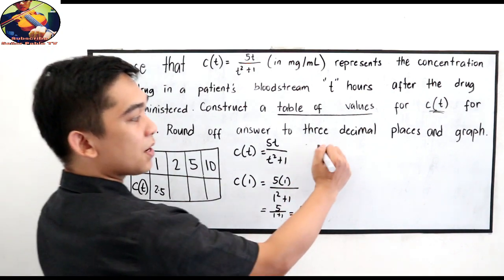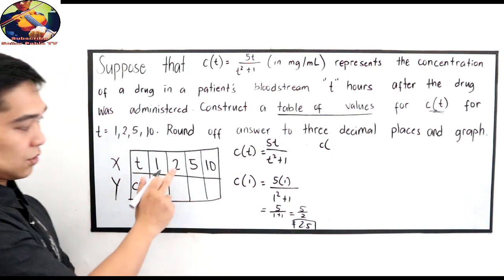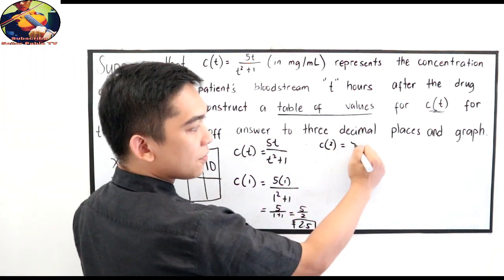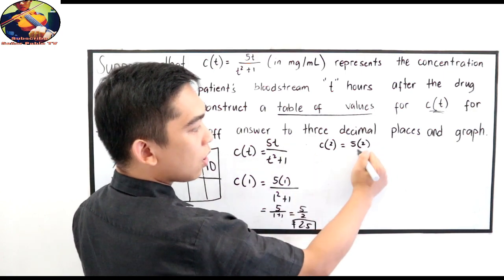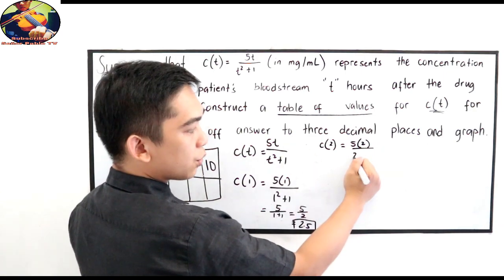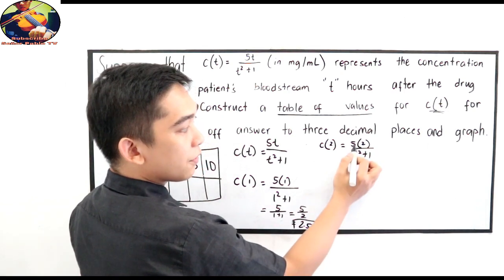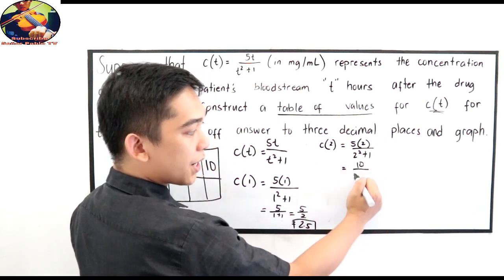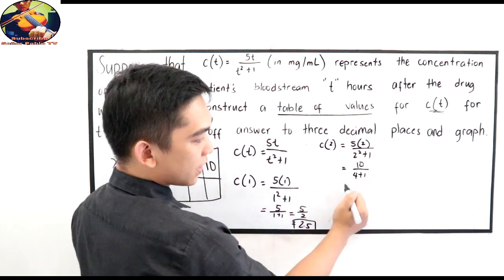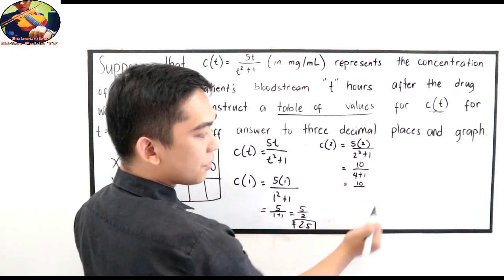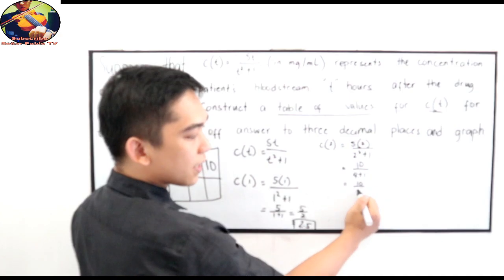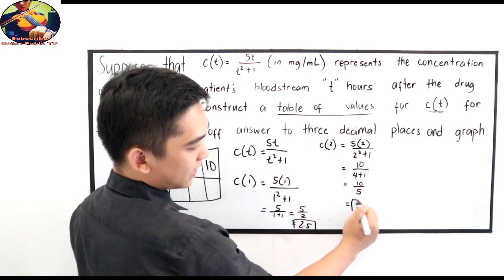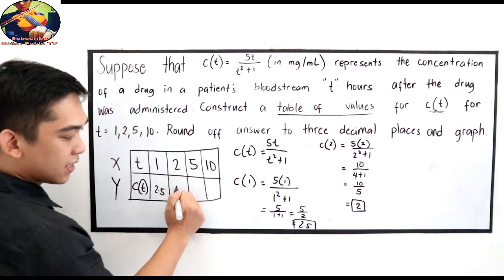Next, when we have C of 2. So, C of 2, just substitute, 5 times 2 all over 2 squared plus 1. 5 times 2, that is 10 all over 2 squared, 4 plus 1. So, 10 all over 4 plus 1, 5. 10 divided by 5, 2. So, our C of 2 is 2.